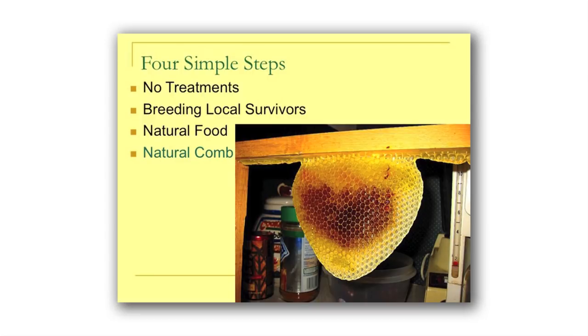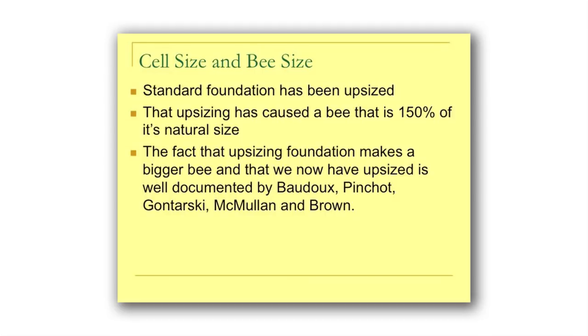My fourth simple step is natural comb. So we have: no treatments, breeding local survivors, natural food, and natural comb. There's been a lot of research on this, but I know I couldn't solve my varroa problem until I dealt with the cell size issue. When foundation was invented, they were making it at about 4.4 to 5.0 millimeters. Eventually it was about 5.1, and most foundation in the United States started at about 5.08. Before foundation was invented, bees built whatever they built naturally.